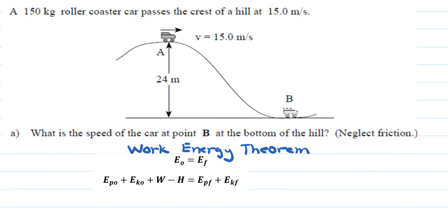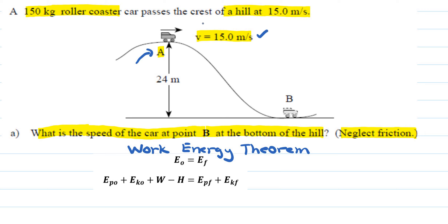Now let's apply the work-energy theorem to a few problems. We have a 150 kilogram roller coaster starting at position A, passing the crest of a hill at 15 meters per second (initial speed). At point A, which is 24 meters above the ground, the coaster has both kinetic energy (due to its initial speed) and potential energy (due to its height).